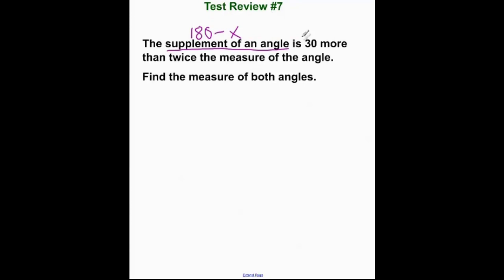Now, what is is in algebra? You know I've been drilling that is is equal to. 30 more, so we're going to be adding something. Then twice, we're going to be multiplying the measure of the angle. The angle is x. So we have 180 minus x is equal to 30 plus 2 times x.